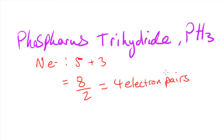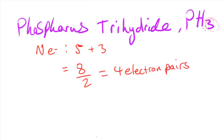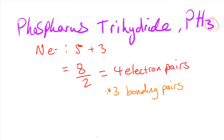Now we need to figure out how many of these electron pairs are bonding pairs. Looking at the formula, we can see there are three hydrogens and each hydrogen is going to form a covalent bond to the phosphorus, so there are going to be 3 bonding pairs. Out of the 4 electron pairs, 3 are bonding pairs, which means the remaining 1 is a lone pair.